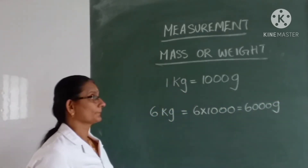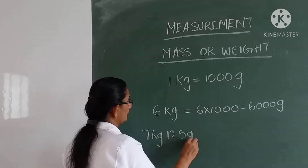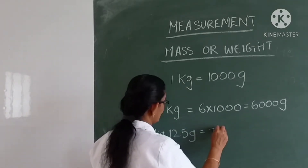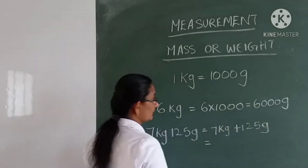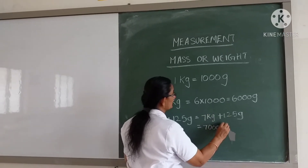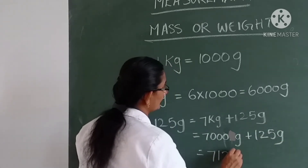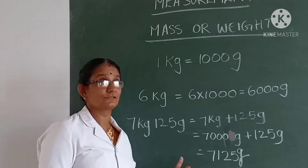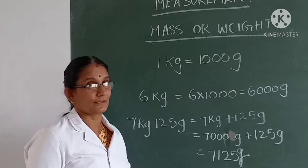Let us try another example: 7 kilogram and 125 gram. We convert 7 kilogram into grams by multiplying by one thousand, giving 7000 grams. Then we add the remaining 125 grams: 7000 grams plus 125 grams equals 7125 grams. So we can do conversions of kilogram into gram in this way.